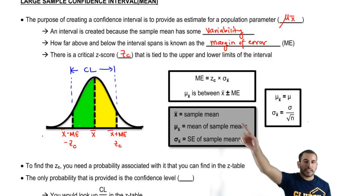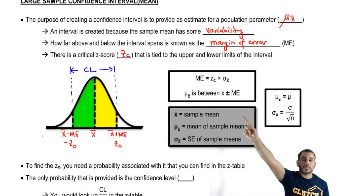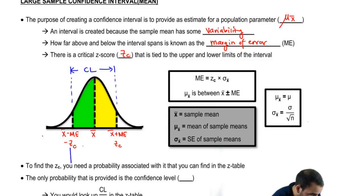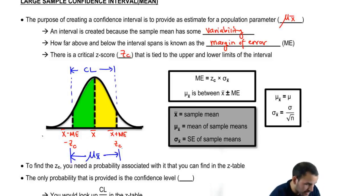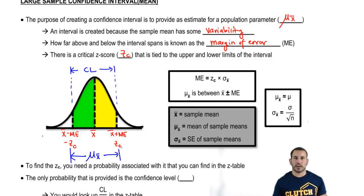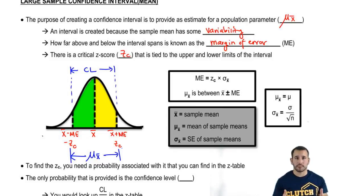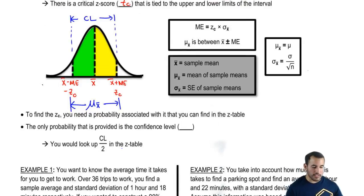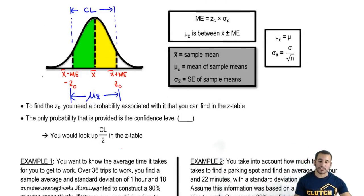The population mean is said to be between x-bar, the sample mean, plus or minus this margin of error. So basically we can be 95% confident — or whatever percent confident — that the population mean lies within this interval. Now let's talk about the Z critical and how to find that.